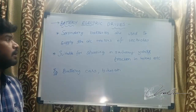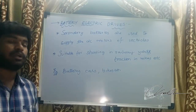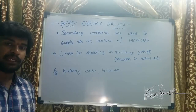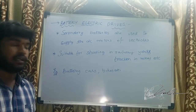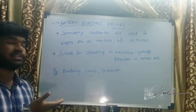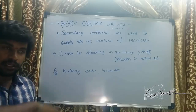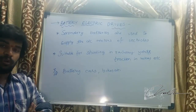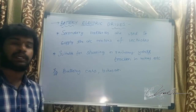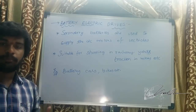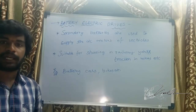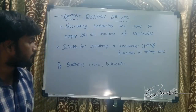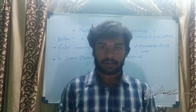Battery electric drives use secondary batteries — lead-acid batteries — to supply DC motors. These drives are suitable for shunting in railway yards. They are also used for traction in mines; in coal mines, small trolleys run on tracks inside tunnels to carry coal or ores. Examples include battery-powered cars and bikes.